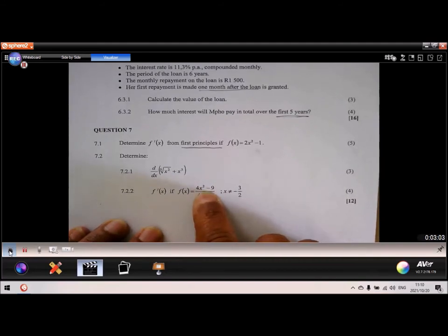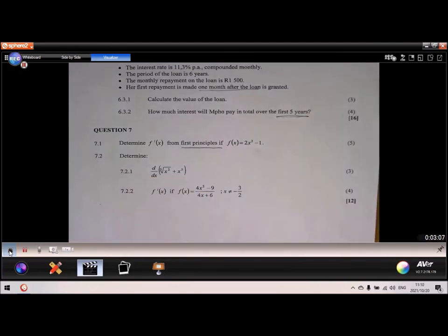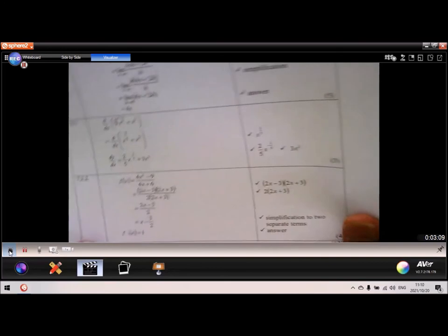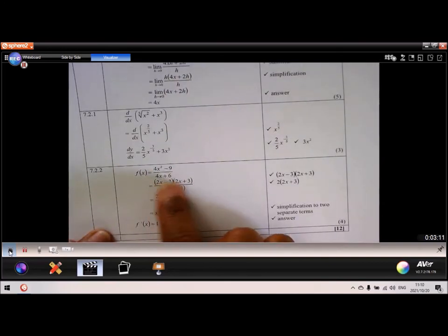So I should recognize maybe this is something different. So factorization should be the key. Factorize. Cancel the two brackets. And you're left with that.